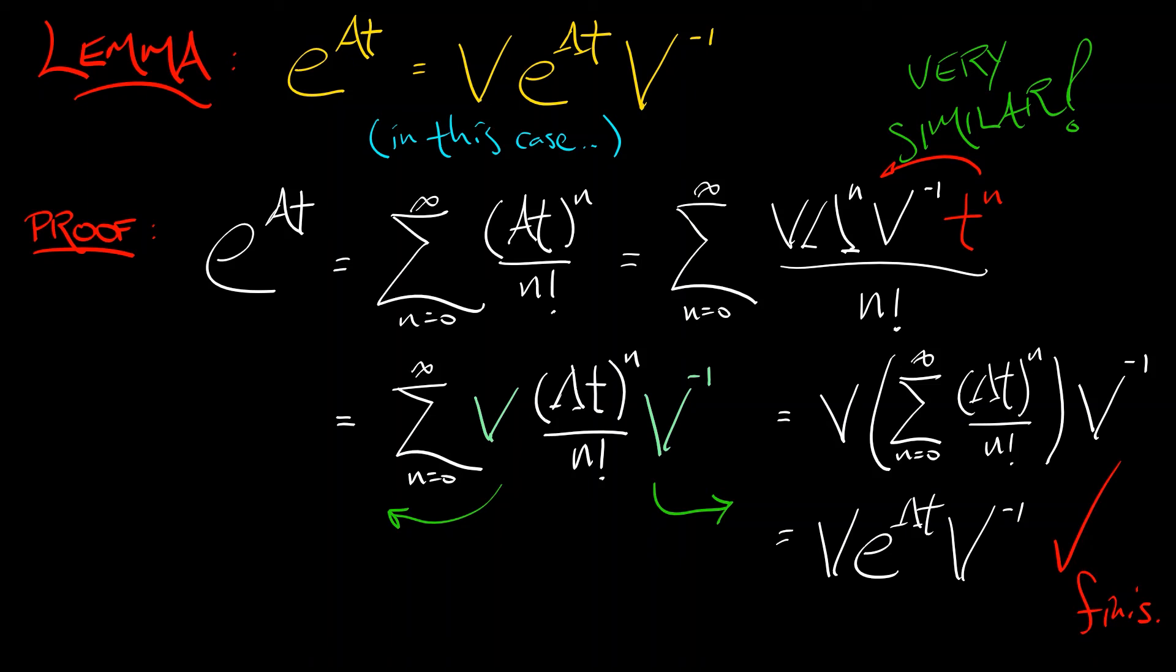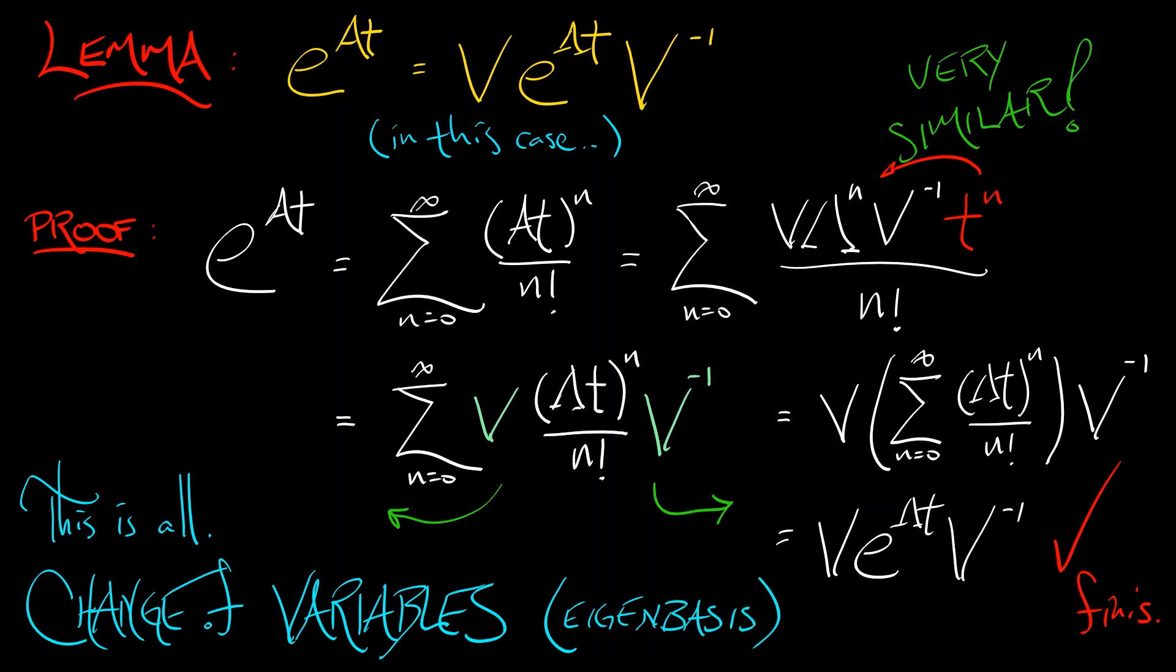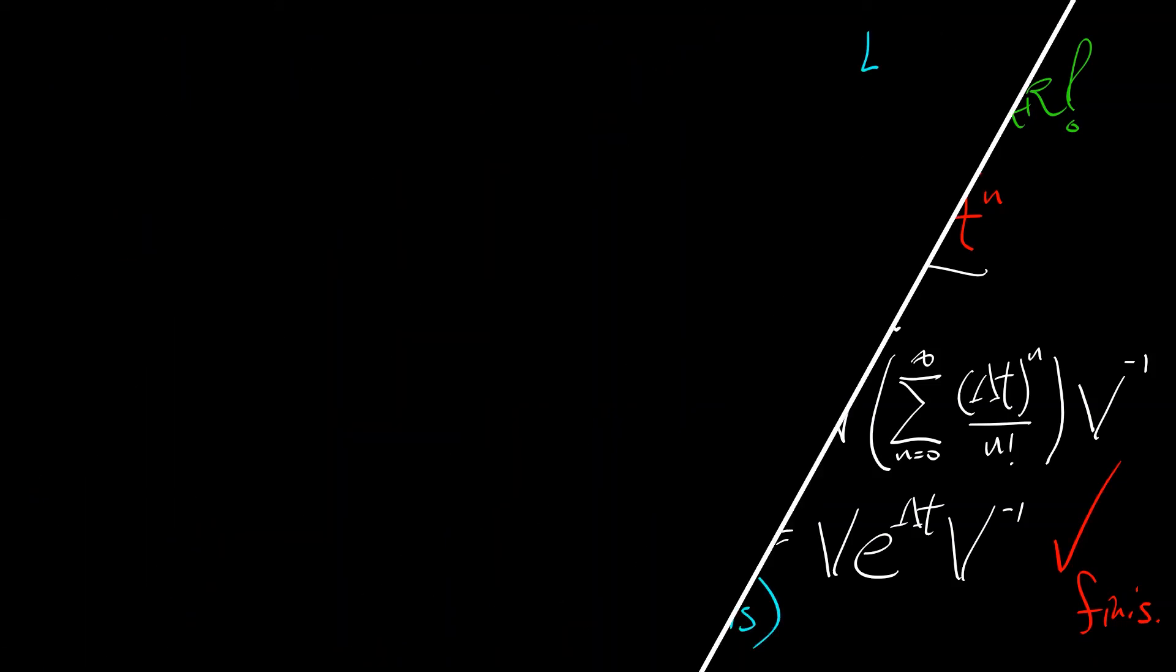Now, this makes it possible to exponentiate a matrix in this simple case. And really, this is all just a change of basis, a change of variables that you may have learned in your linear algebra class. At this point, an example would be in order.